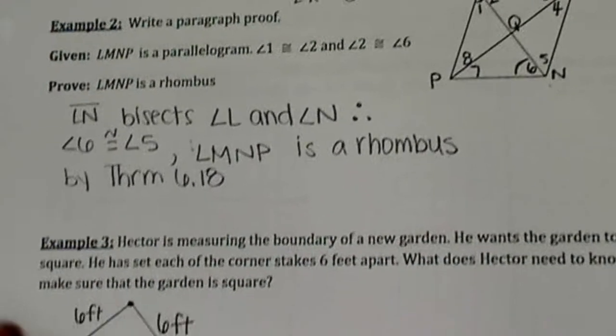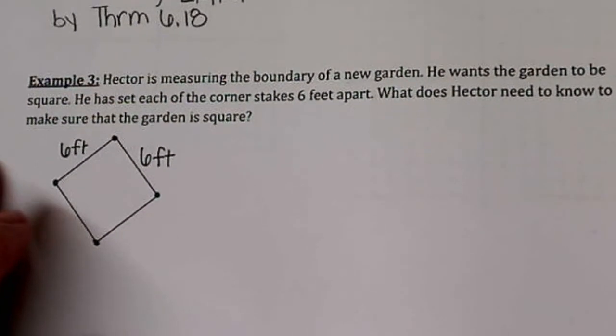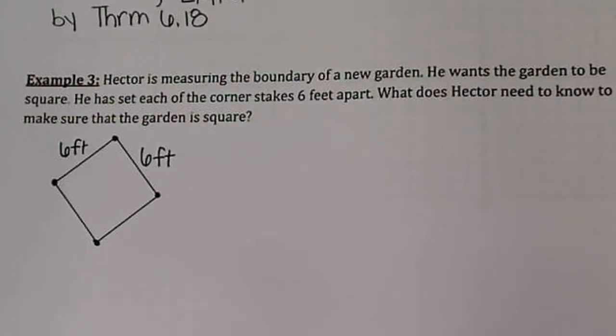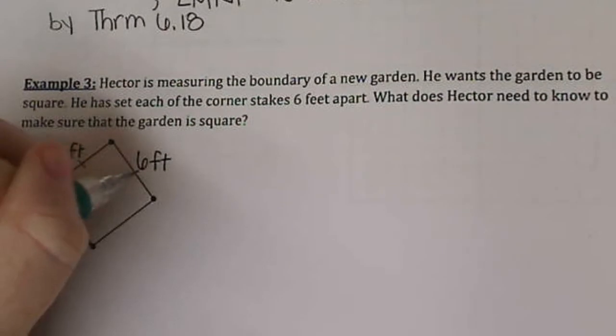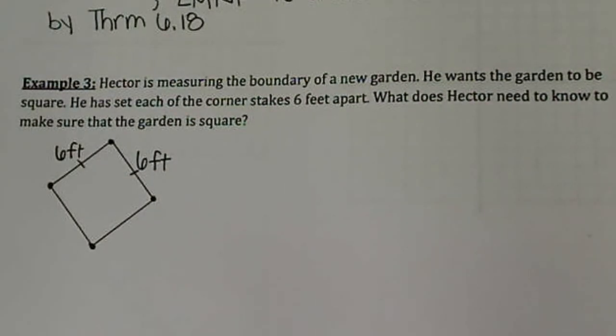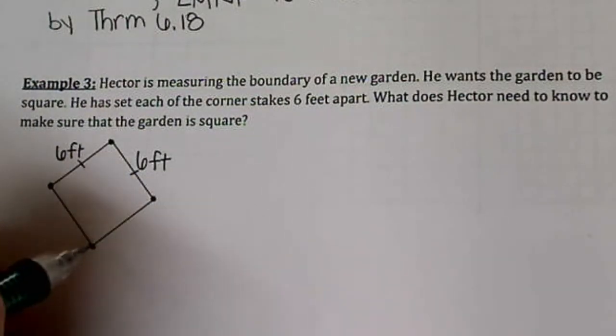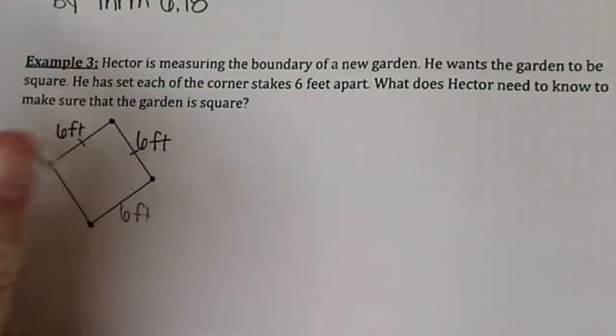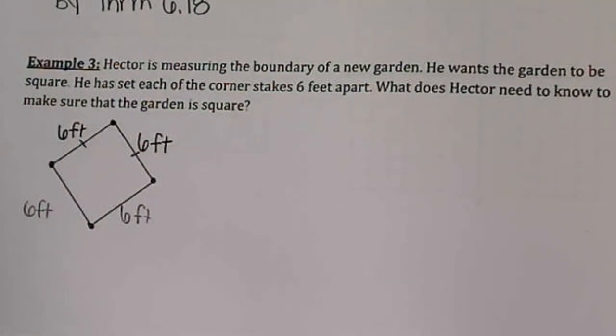Okay, number 3. Let's talk about squares. You have here a garden, and you know that these two sides are obviously congruent because it tells you. And it tells you that each corner stake is 6 feet. So even though these are not marked, these are also 6 feet because it tells you right here that they're all 6 feet apart. So we want to make sure that our shape is a square.